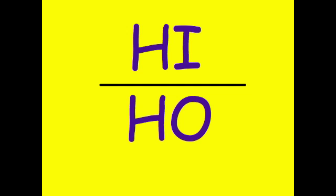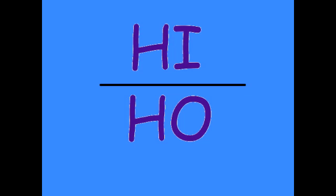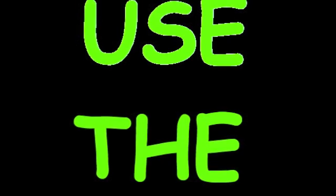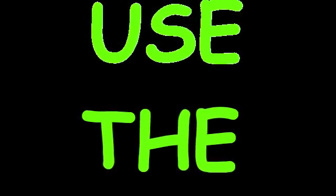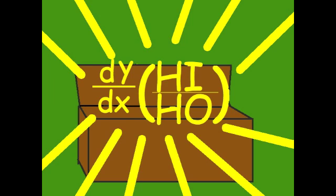A function lies over a function, and we need to find the derivative. A function lies over a function, or what could the answer be? Use the quotient rule, and we can find the derivative.